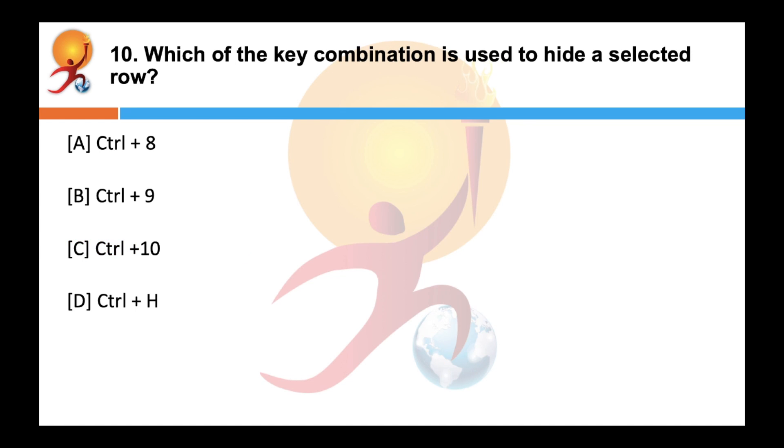Which of the key combination is used to hide a selected row? Correct answer is B. CTRL plus 9 is used to hide a selected row.